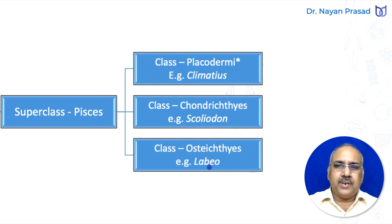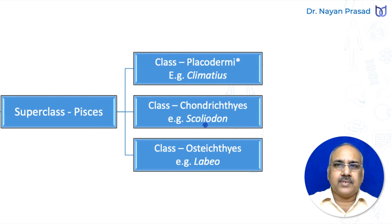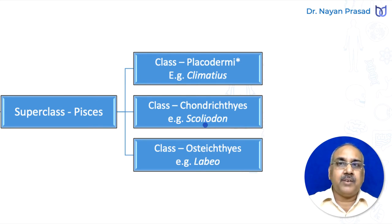Bony fishes include Labio, which is a freshwater fish. Cartilaginous fishes include Scoliodon, the dogfish, a member of the shark group and a marine fish.